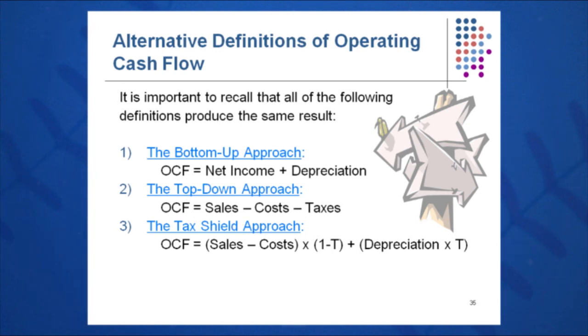Another alternative approach: if you've built your income statement all the way down to net income, you can take NPAT plus D. Net income plus depreciation equals OCF. This is the quick and dirty bottom-up approach.